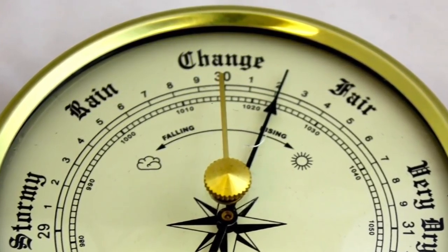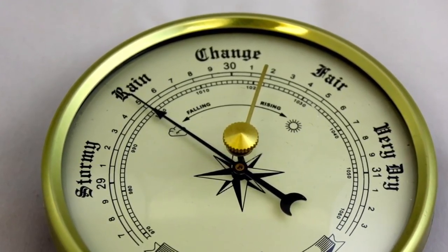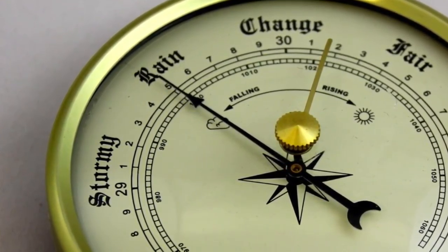If it moves clockwise up the dial, the pressure is increasing, so the weather is likely getting warmer and drier. If the needle turns counterclockwise, the pressure is decreasing and the weather is likely getting cooler and wetter.